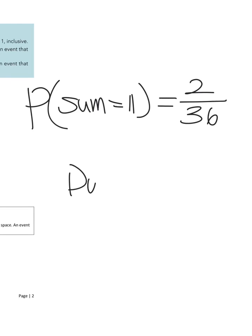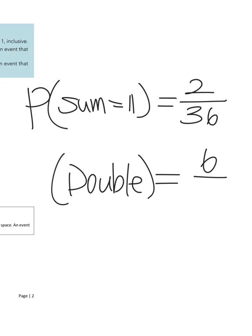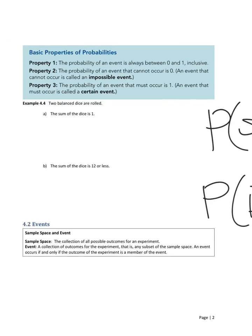The second event was the double. How many outcomes in the double event? One and one, two and two, three and three, four and four, five and five, six and six — six outcomes out of the same sample space of 36. So the probability for the event 'double' is six outcomes out of 36. It's very simple — that is the probability.